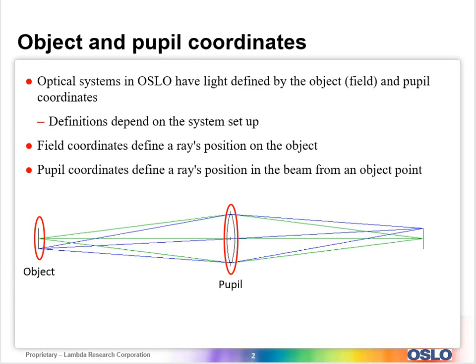You can have the same thing for pupil points — it just depends on the system itself. Generally, field coordinates are going to define a ray position on the object; the object is what we are trying to image or see. Pupil coordinates define a ray position in the beam from an object point. So for these two different object points, we have multiple rays traced that go through the pupil, and likewise we have multiple object points that we can define.